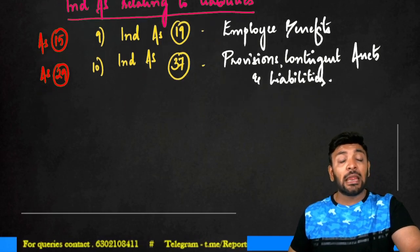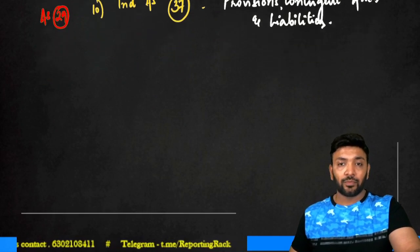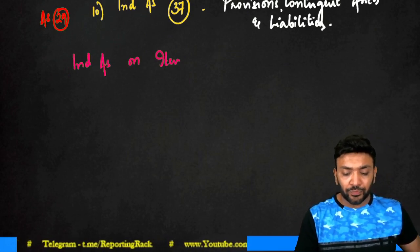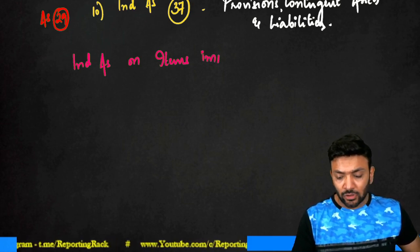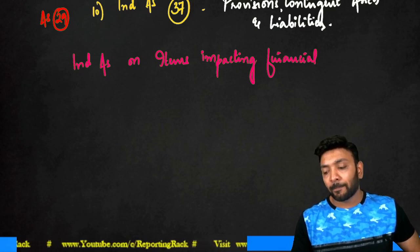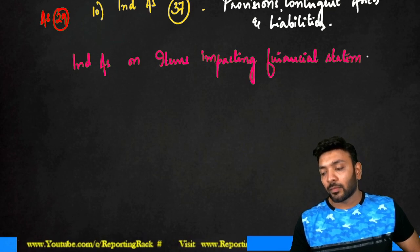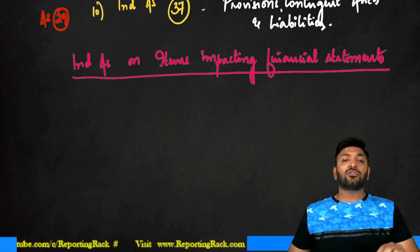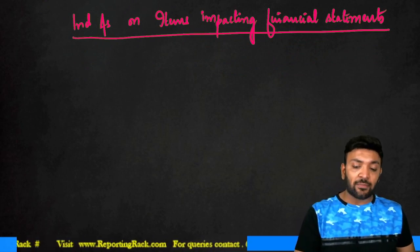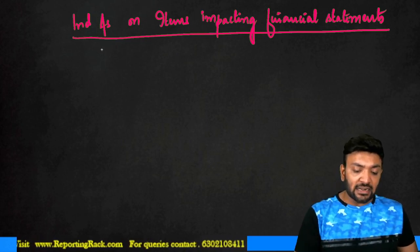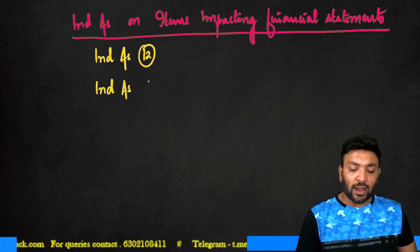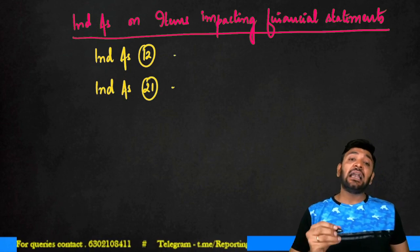Once we are done with assets and liabilities, we will have to learn about certain very important aspects — Ind AS on items which impact financial statements. These standards which impact financial statements are broadly classified into only two items: one standard is called Ind AS 12, and the other is called Ind AS 21. Both these standards had a corresponding accounting standard — AS 22 and AS 11 respectively.